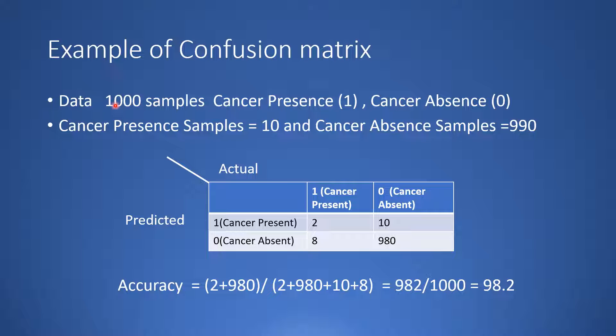We have a machine learning algorithm which is trained to detect whether cancer is present or not. Now we ran that algorithm on this data set and we get this kind of a confusion matrix.